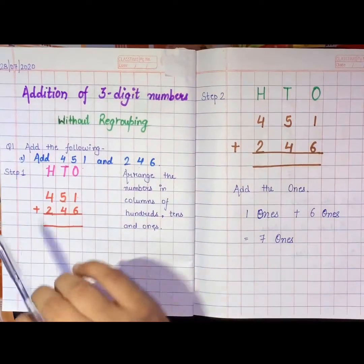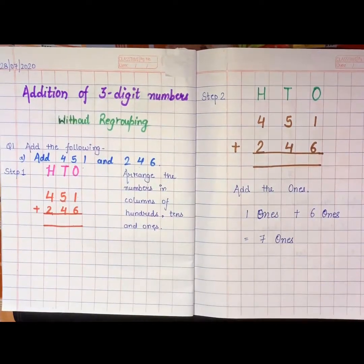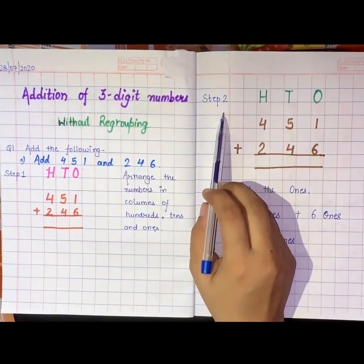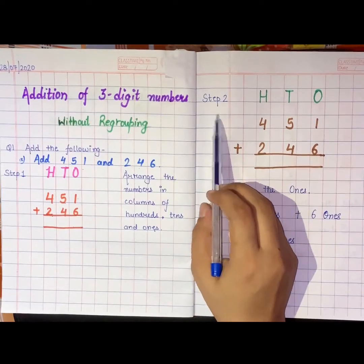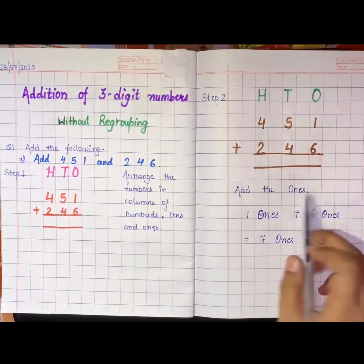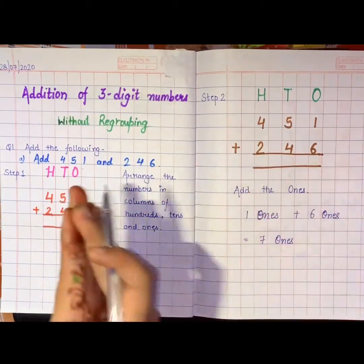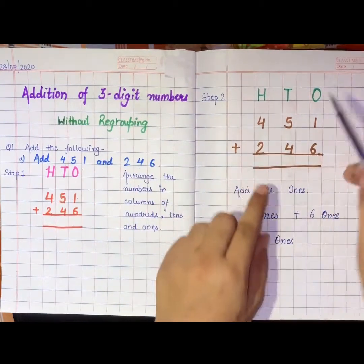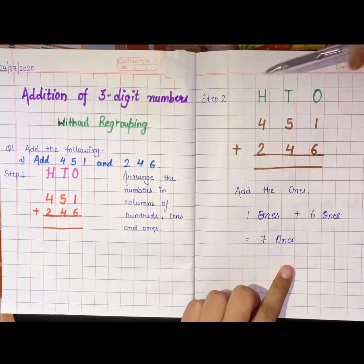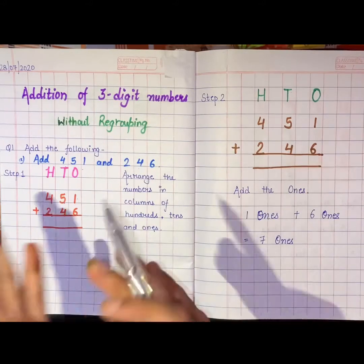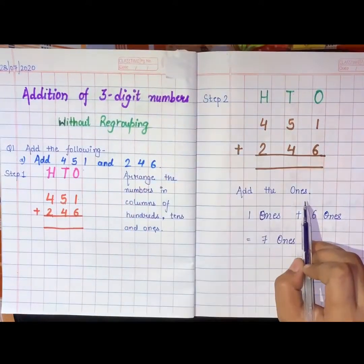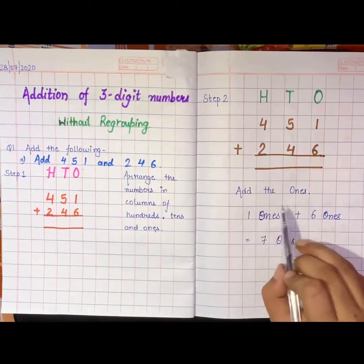My first step is over. Moving ahead to our second step — add the ones. We will add ones, tens, and hundreds separately. Second step is: add the ones.